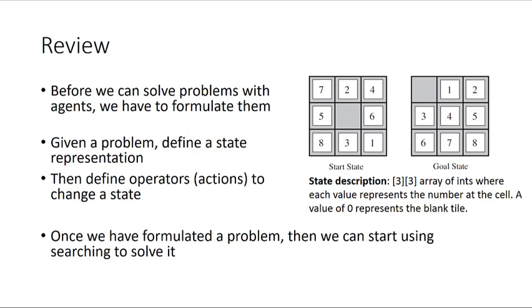We also talked about problems and how we want to formulate them as state space problems. The reason we want to formulate them this way is that it allows agents to come in and systematically solve these problems. So given some problem, the first thing we do is define a state representation. For example, with the 8-tile puzzle problem, our state representation could be a 3x3 array of integers where each value represents the number at that cell and a value of 0 represents the blank tile. Given some state description, we want to define operators or actions to change it, and then we can start using searching to solve it.